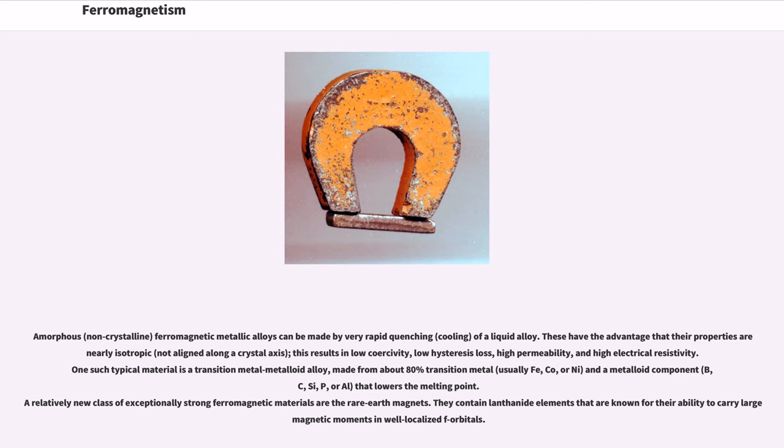One such typical material is a transition metal metalloid alloy, made from about 80% transition metal, usually Fe, Co, or Ni, and a metalloid component, B, C, Si, P, or Al, that lowers the melting point.